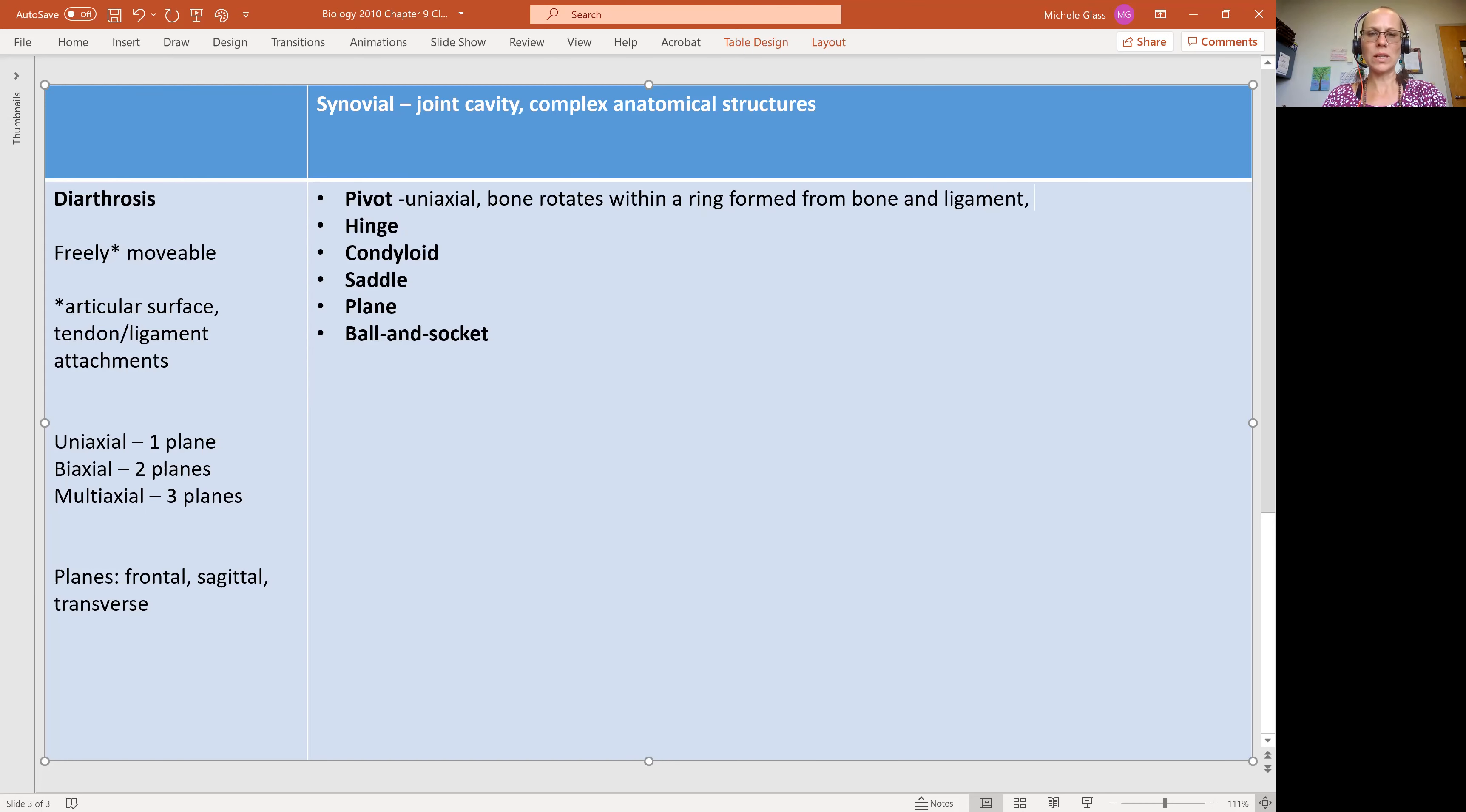Examples include C1, which remember has the name atlas, and C2, which remember has the name axis. So we're talking about the first and second vertebrae of the vertebral column.